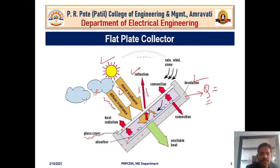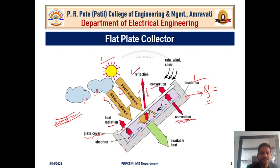There are three methods of heat transfer in the system: convection, radiation, and conduction. The fluid — suppose water — is circulated through the tubes and is heated by convection and radiation heat transfer. So in a flat plate collector there are two primary modes of heat transfer to the fluid: radiation and convection.